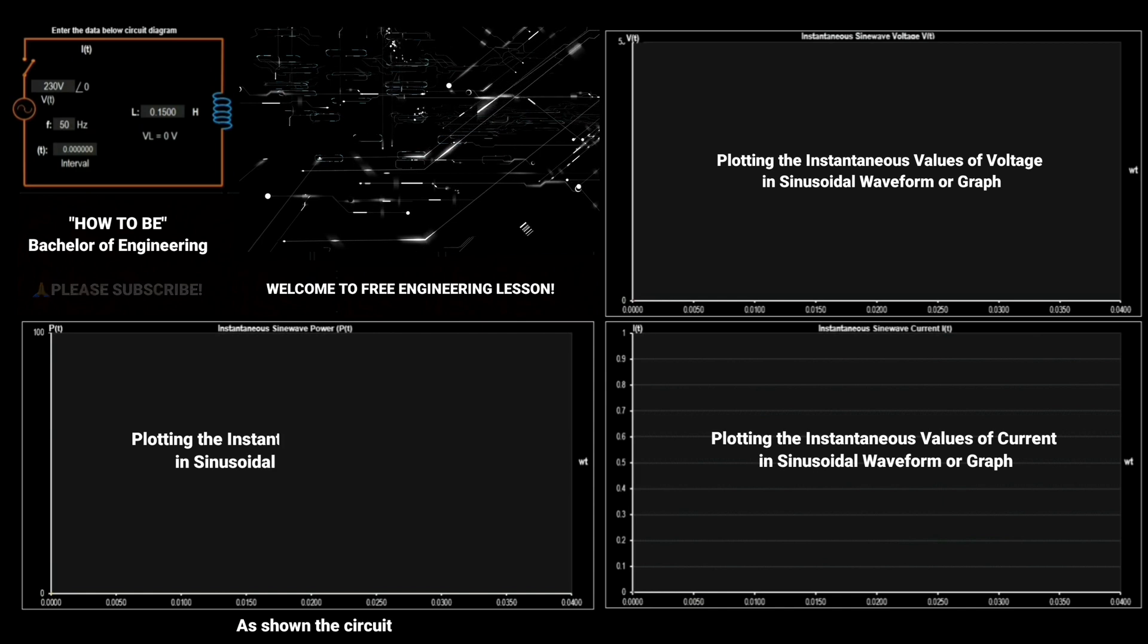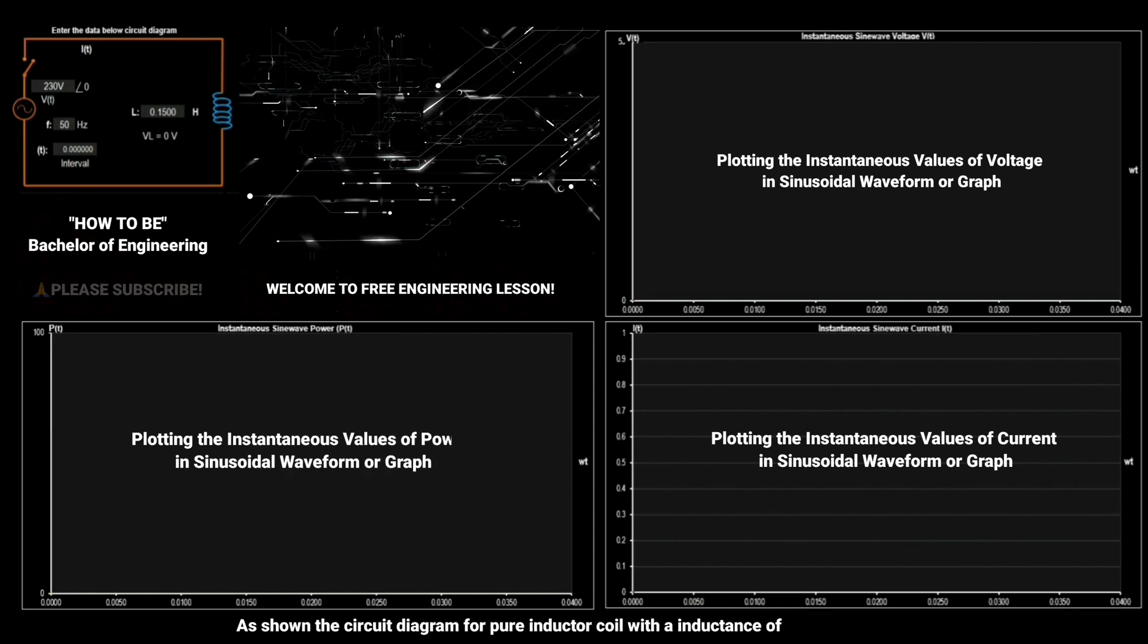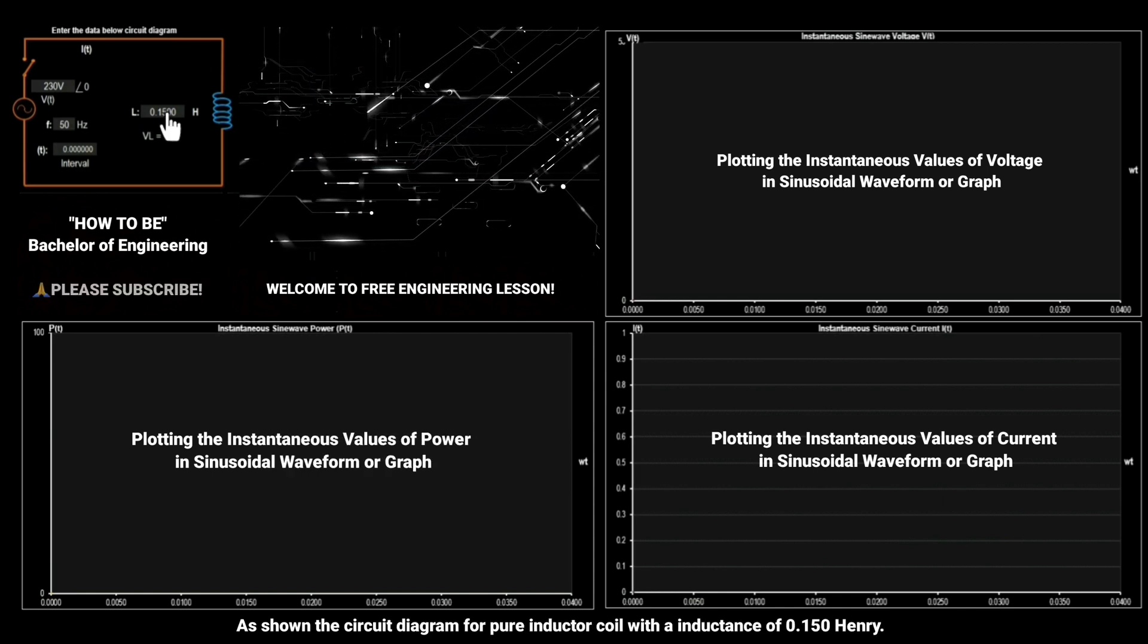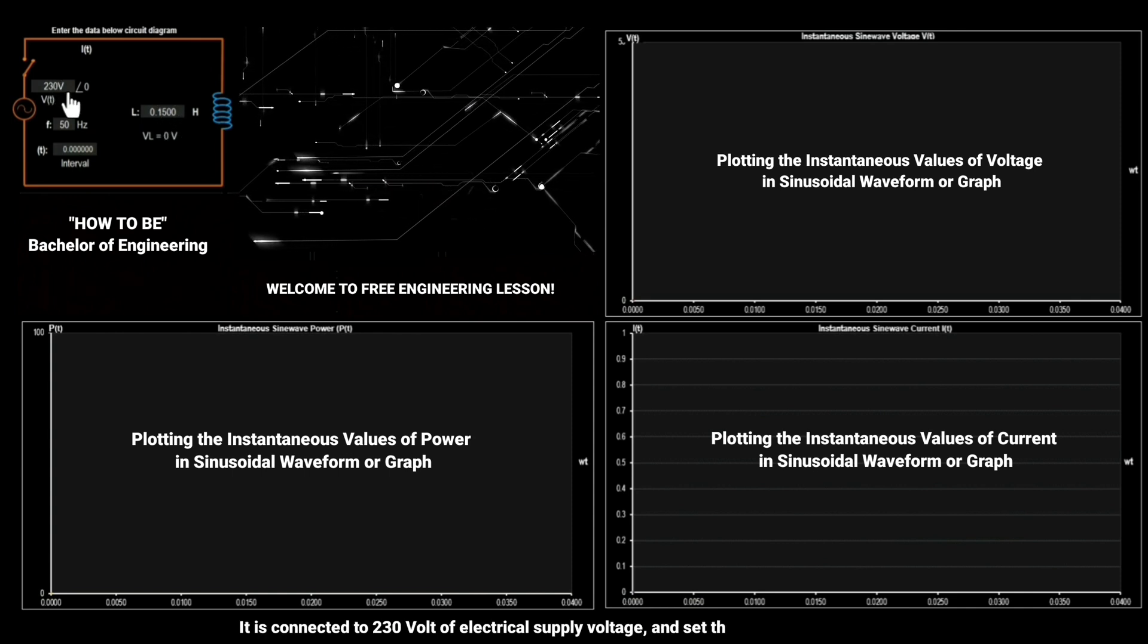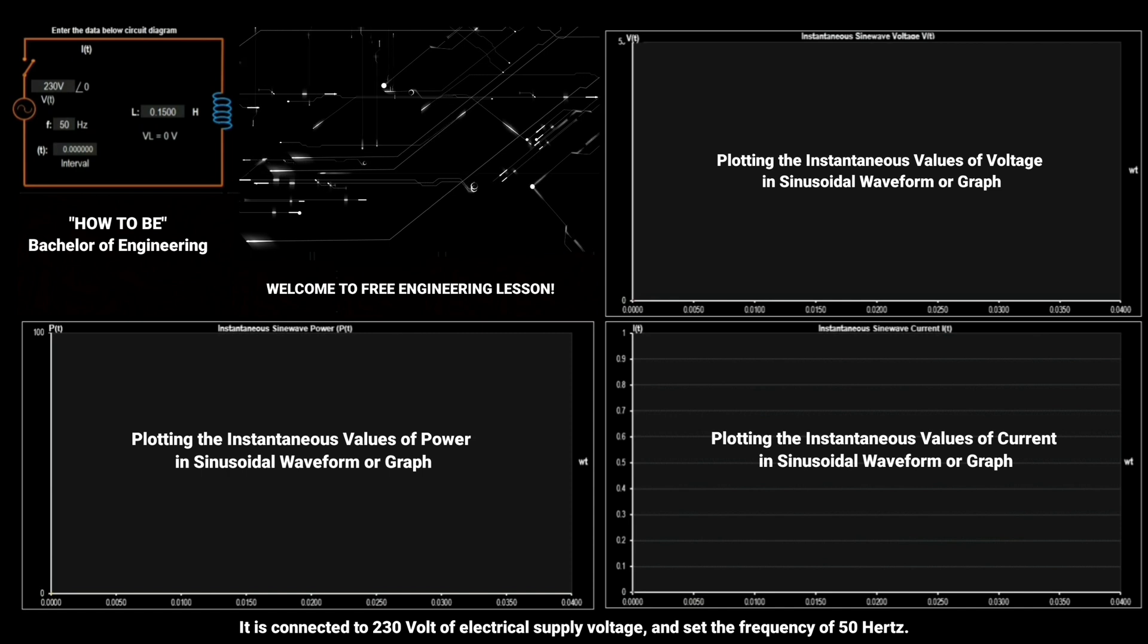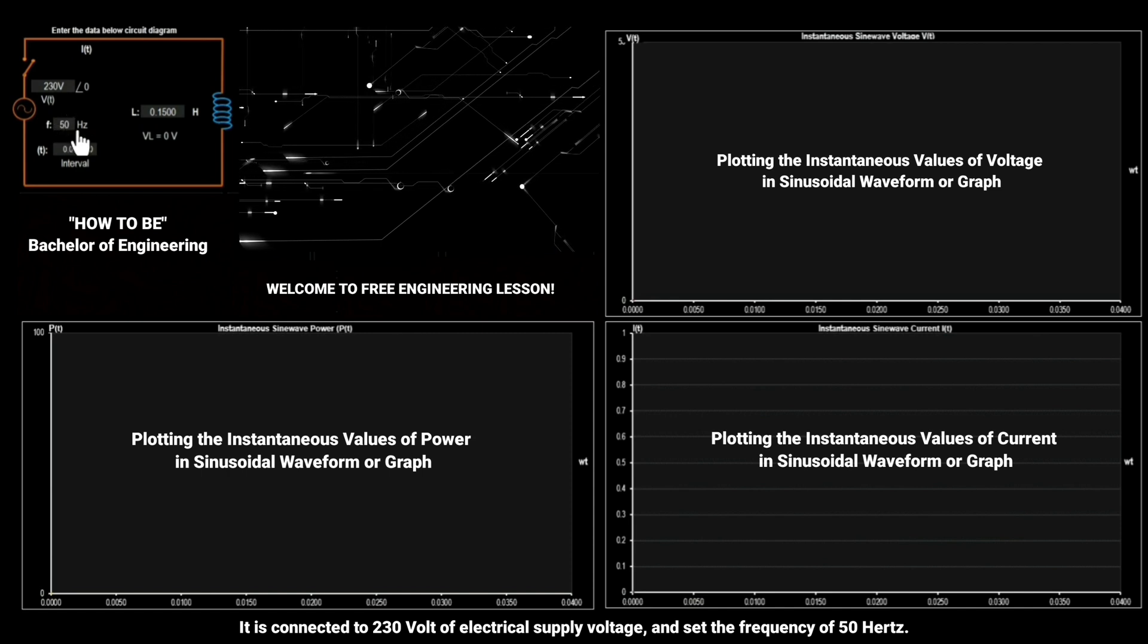As shown the circuit diagram for pure inductor coil with a inductance of 0.150 Henry, it is connected to 230 volt of electrical supply voltage and set the frequency of 50 hertz.